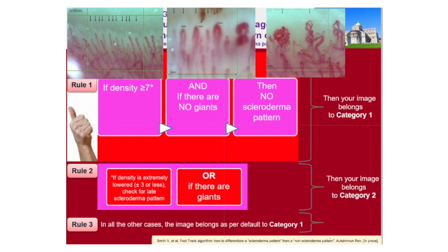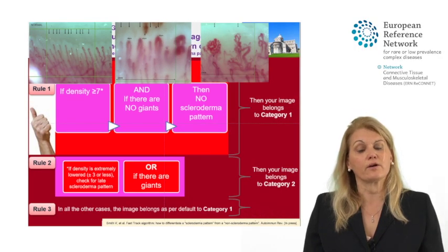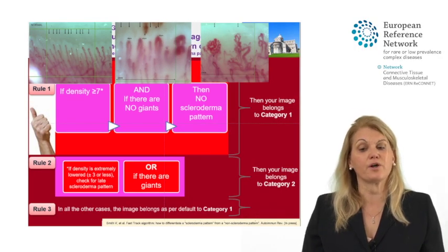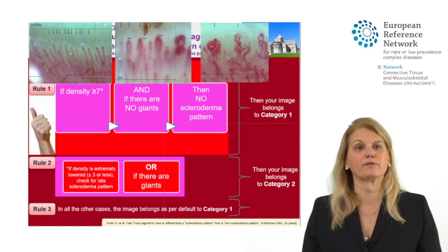If your case doesn't apply to rule number one or rule number two, then automatically you are directed to rule number three. This is very simple: in all other cases not covered by rule one or rule two, you can call your image a category one or non-scleroderma pattern.